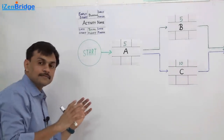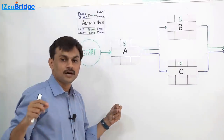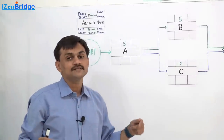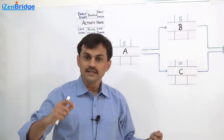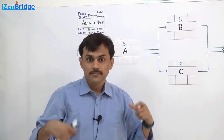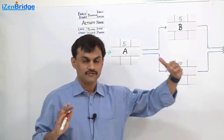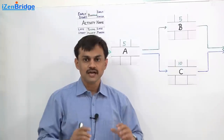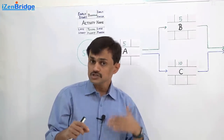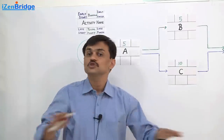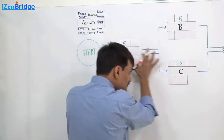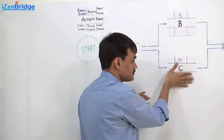The goal of the critical path method is figuring out the longest path, which is the same as determining when the earliest the project can finish. This can be confusing — the critical path is not like choosing a shortest route between two locations. All activities must be completed; it's not a case where a shorter path means other activities get dropped.